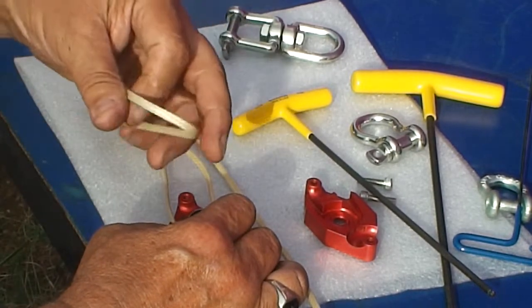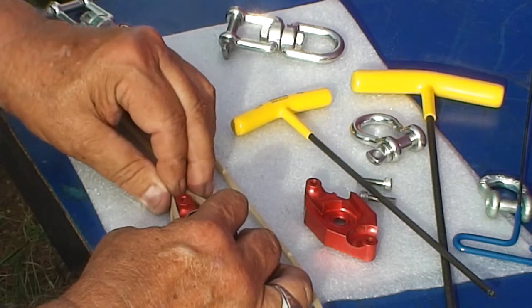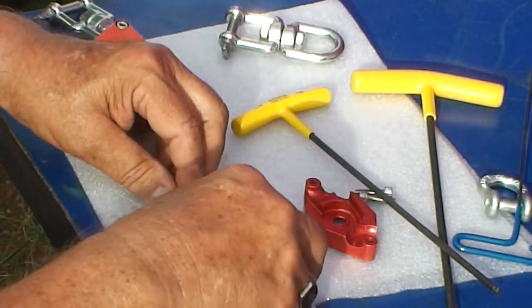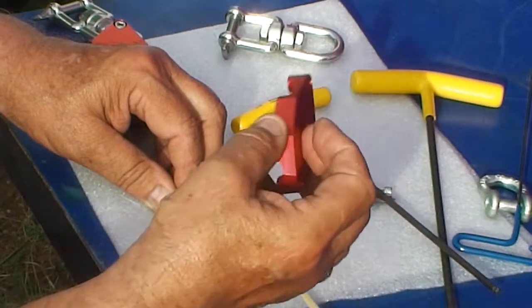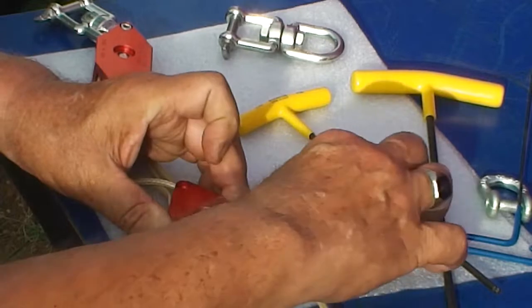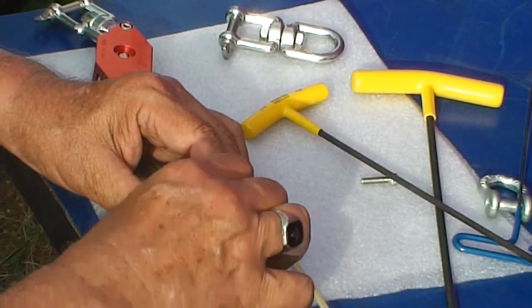You take the top piece, you put it around the top bearing. Now you take your clevis and the other half of your nifty lift, put them down tight. Put your cap screws in.